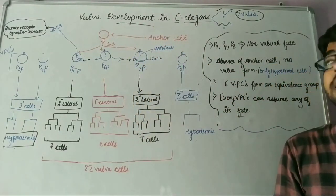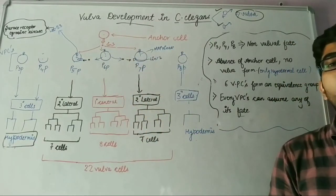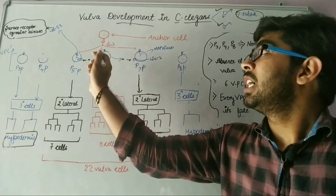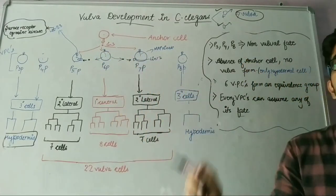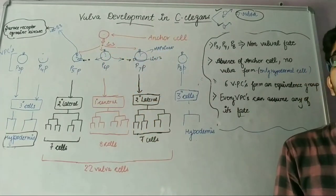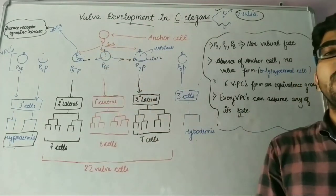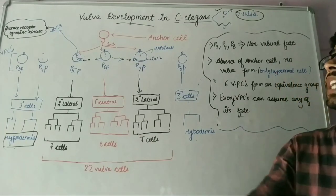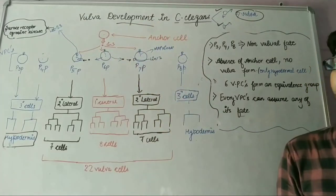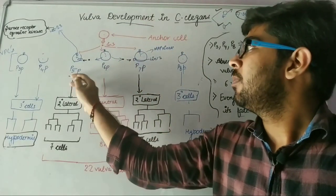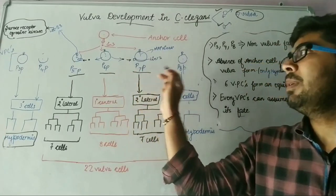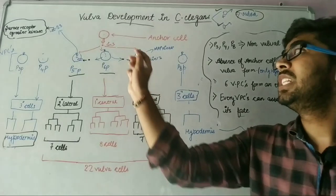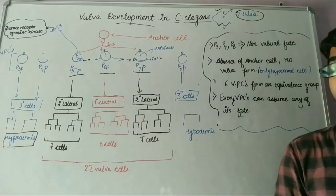First of all, this anchor cell secretes LIN3 protein in the form of a concentration gradient. It means the VPC cells which are adjacent to the anchor cell will receive a large amount of LIN3 protein compared to the vulva precursor cells which are found at distant regions from the anchor cell. That's why P5P, P6P, and P7P are found in close vicinity to the anchor cell and receive large concentrations of LIN3 protein.